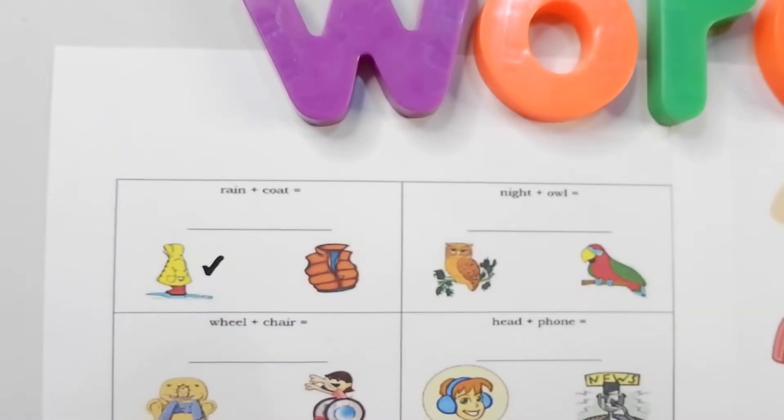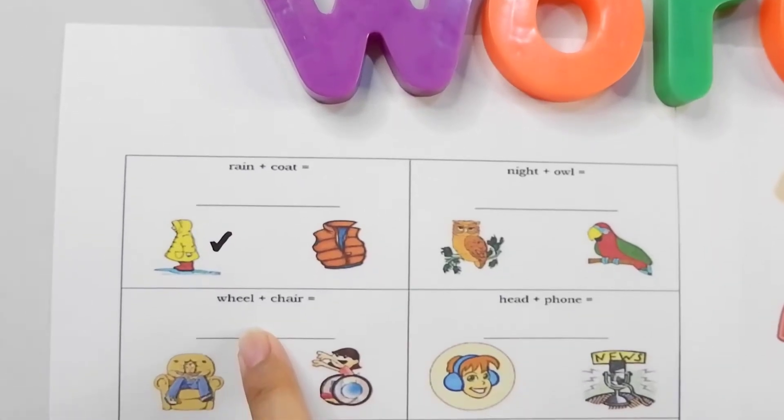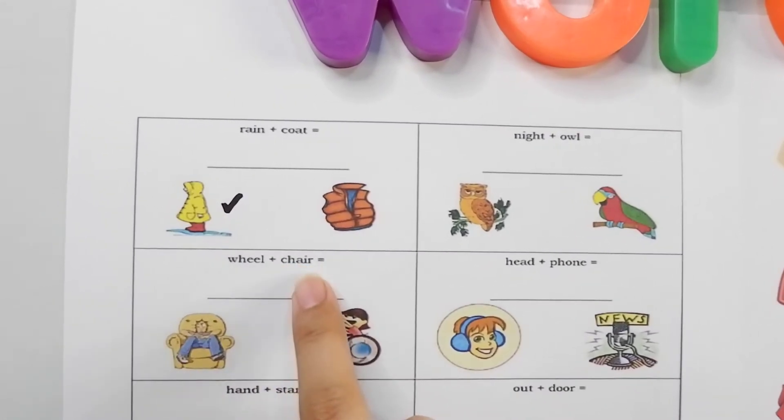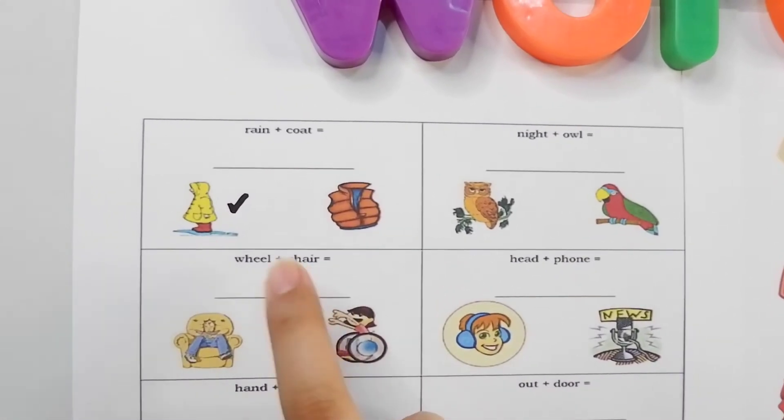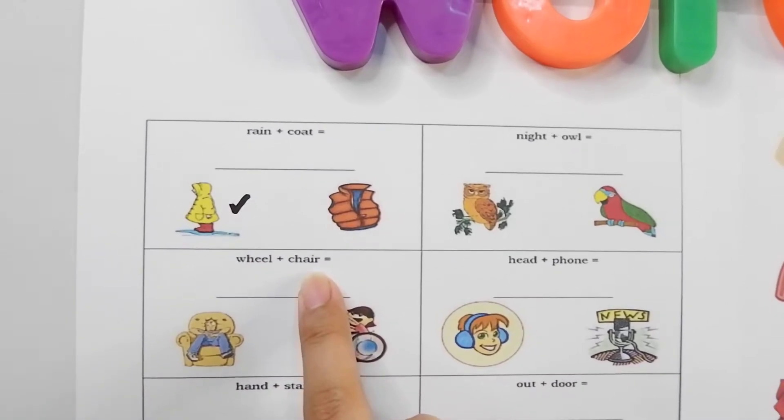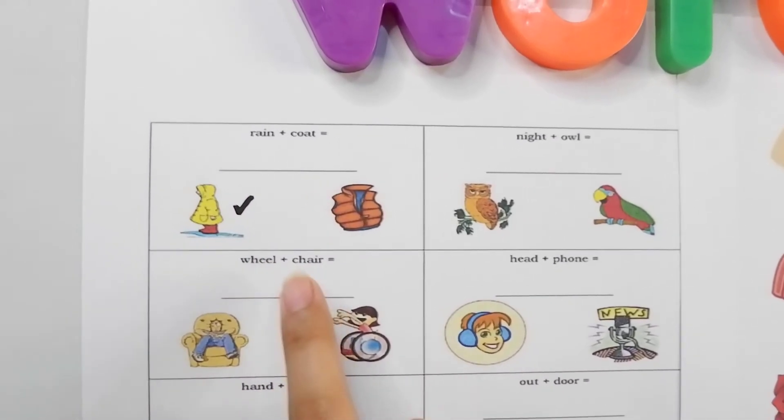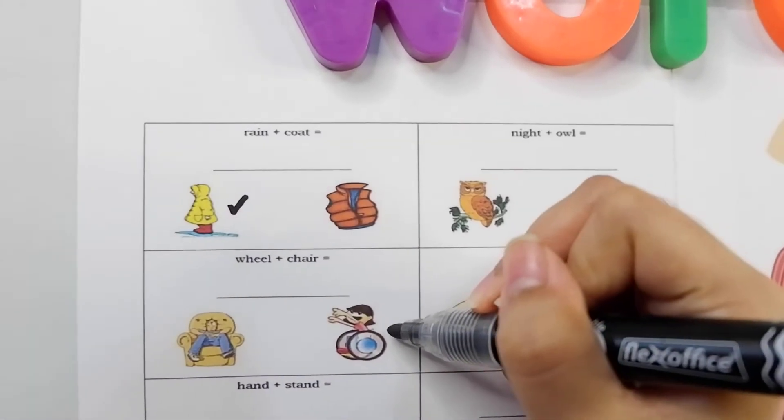Next one chameleons, we have wheel plus chair. Put them together we get wheelchair. It's this one over here.